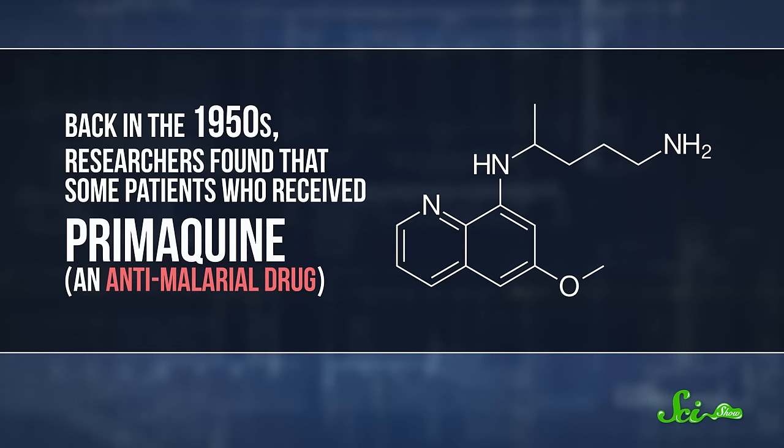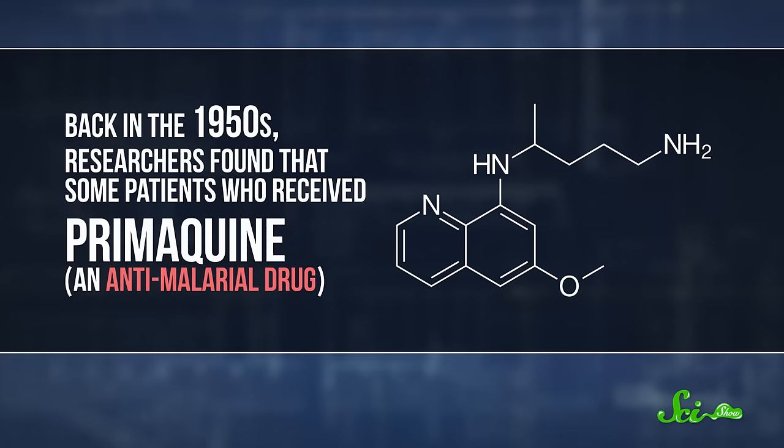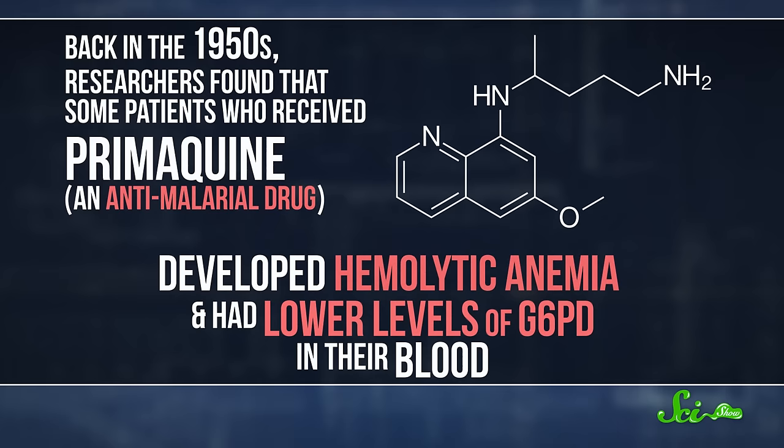Back in the 1950s, researchers found that some patients who received Primoquin, an anti-malarial drug, developed hemolytic anemia and had lower levels of G6PD in their blood. Which leads to an interesting theory involving G6PD deficiency in malaria.